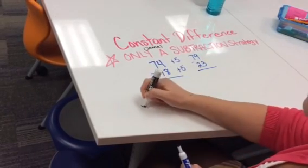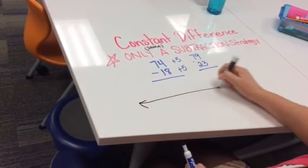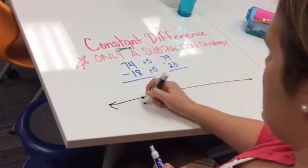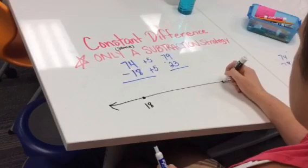The way this would look on a number line, I'm going to show before I solve. First, I'm going to plot 18 and 74.